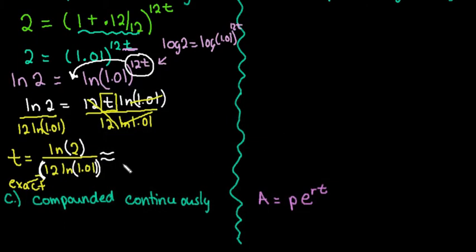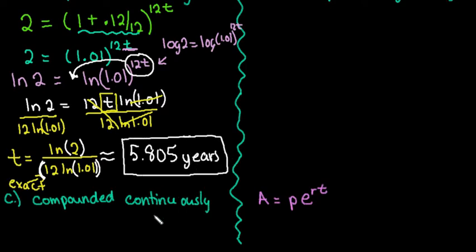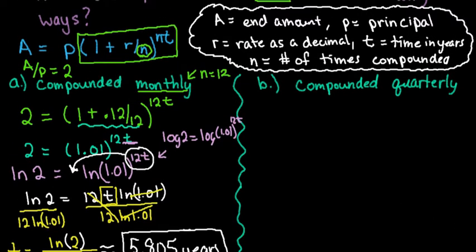It gives us the exact same answer, so it's just a matter of preference - do you like natural log or do you like logarithms? Going back to here, we'll write down our answers. Our time ends up being approximately 5.805 years. I just rounded to three places because typically it's three or four decimal places. After about 5.805 years, your amount would double at a rate of 12%, and that doesn't matter what amount you started with.